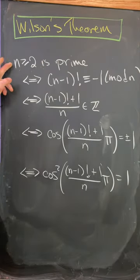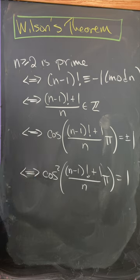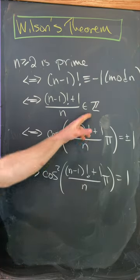Let's recall that n is prime if and only if n minus 1 factorial is congruent to minus 1 mod n. But that's equivalent to n minus 1 factorial plus 1 over n being an integer.